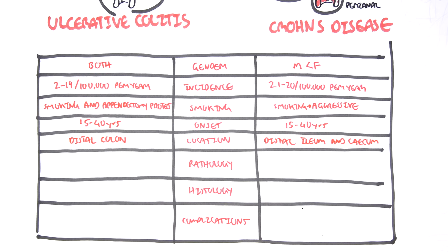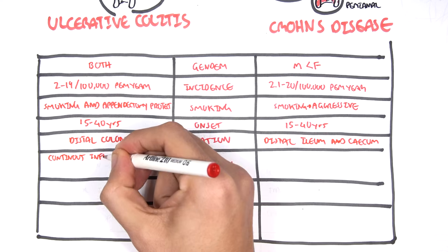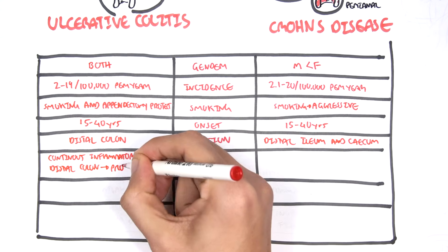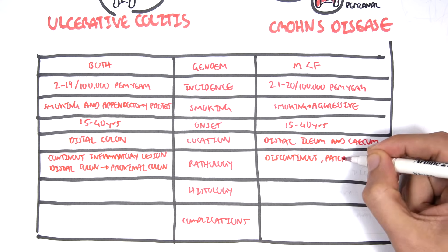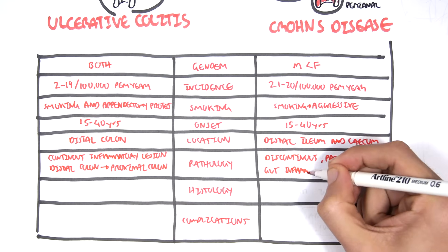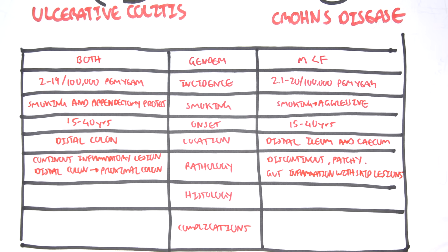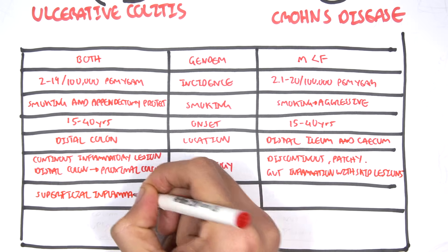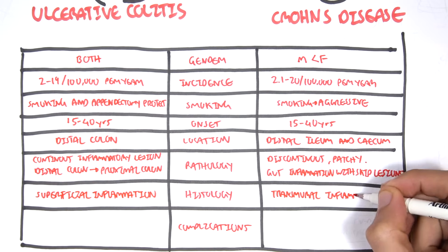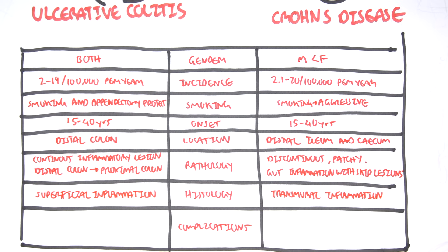Regarding pathology, ulcerative colitis is a continuous inflammatory lesion that progresses from the distal colon to the proximal colon. Crohn's disease, by contrast, is typically discontinuous, patchy gut inflammation with skip lesions. Histologically, ulcerative colitis is a superficial inflammation, whereas Crohn's disease is a transmural inflammation, meaning it goes through all the layers of the colon.